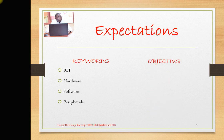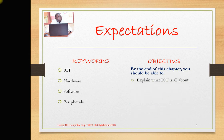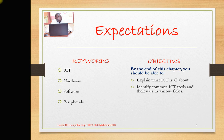The objectives we have to get from this chapter: by the end of this chapter, you should be able to explain what ICT is all about. When asked what is ICT, you can tell what it's all about. You will also be able to identify common ICT tools and their uses in various fields.